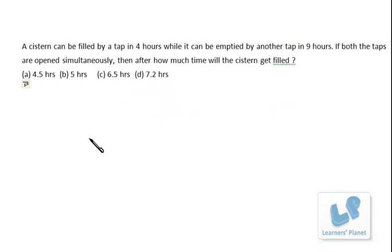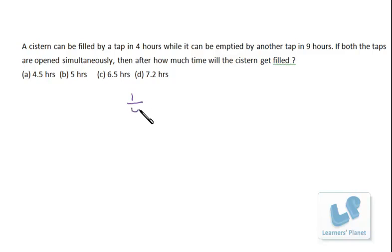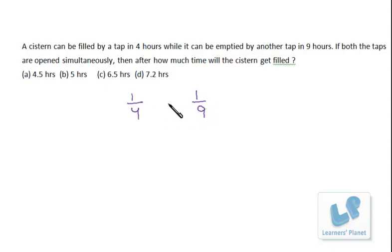Now let's try this question. A cistern can be filled up by a tap in 4 hours while it can be emptied by another tap in 9 hours. If both the taps are open simultaneously, then after how much time will the cistern get filled? Here we introduce the concept of negative work. This particular tap is filling the tank and this tap is emptying the tank — every hour this tap fills 1/4 of the tank.